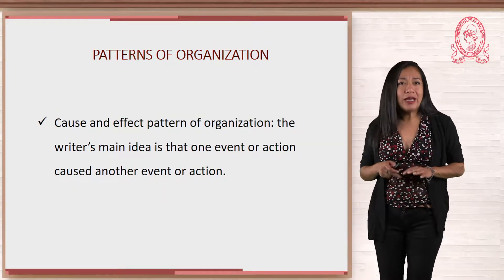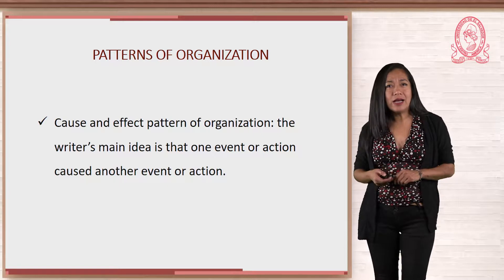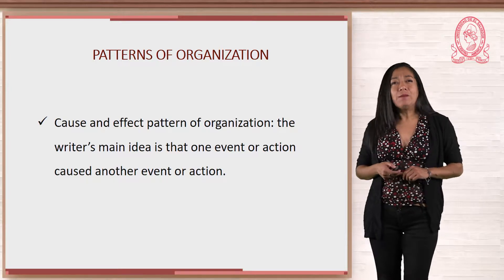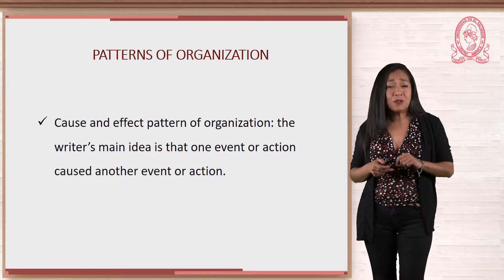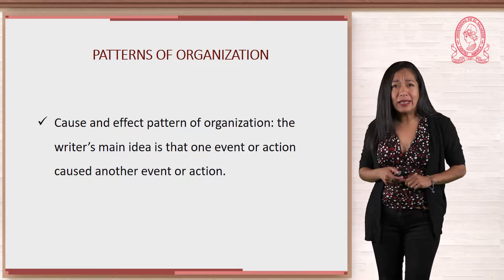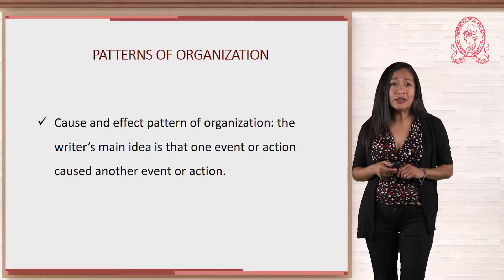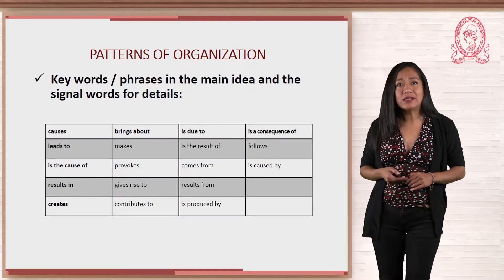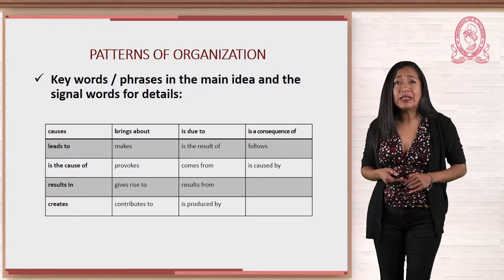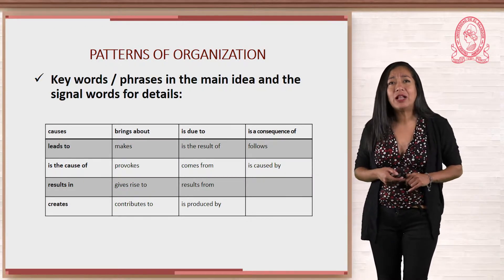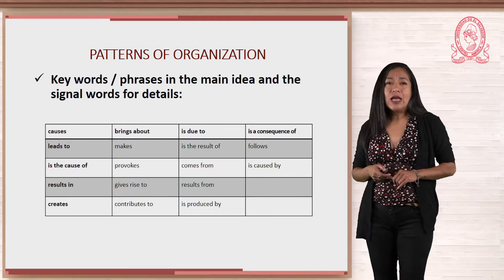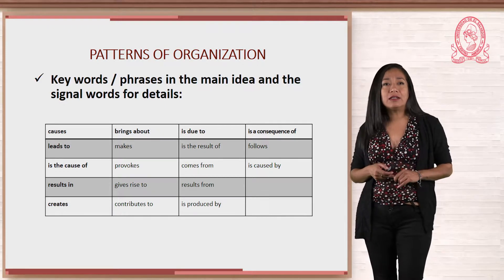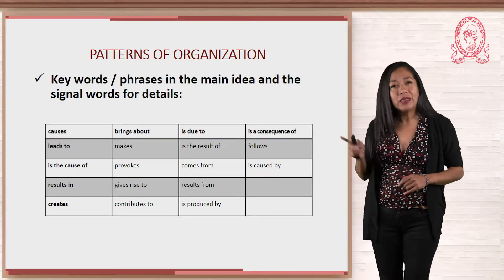Today we are going to study the cause and effect pattern of organization. In their book Advanced Reading Power, Mikoleki and Jeffries explain that in this pattern, the writer's main idea is that one event or action caused another event or action. They present a list of different keywords and phrases we may find when reading material written in the cause and effect pattern. Keywords and phrases in the main idea and the signal words for details are the same.